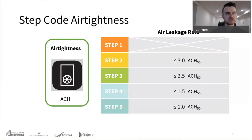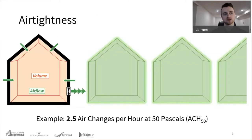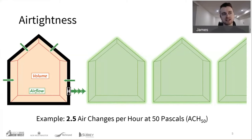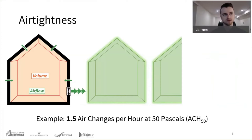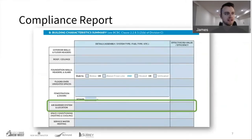To illustrate the numbers: at step 3, that's 2.5 ACH50, meaning over the course of an hour you would have transferred two and a half times the volume of the building at the test pressure. Stepping down to 1.5 means less airflow and less volume. Compliance with the step code also requires noting what the air barrier system is, besides the target number. The goal is to make the building airtight.